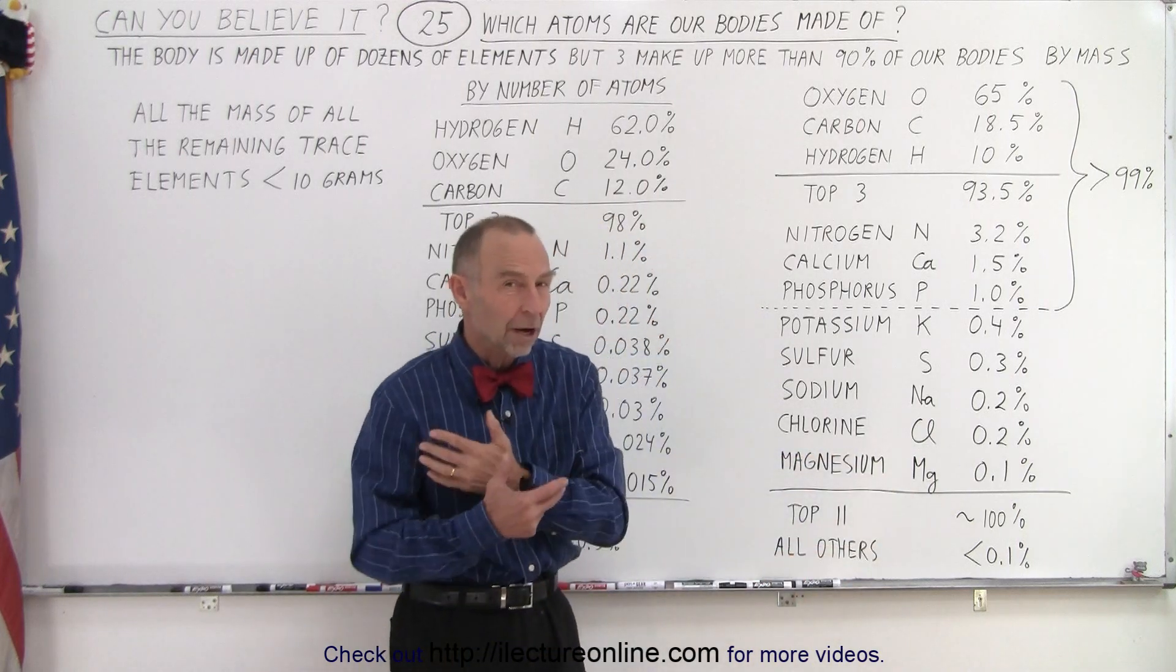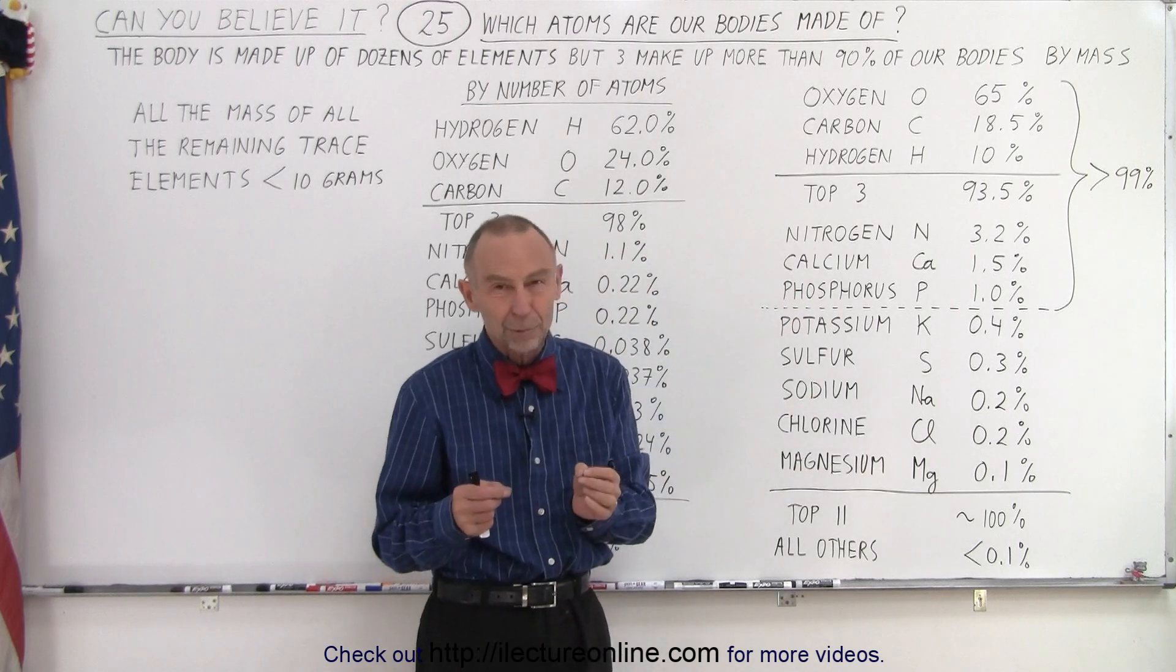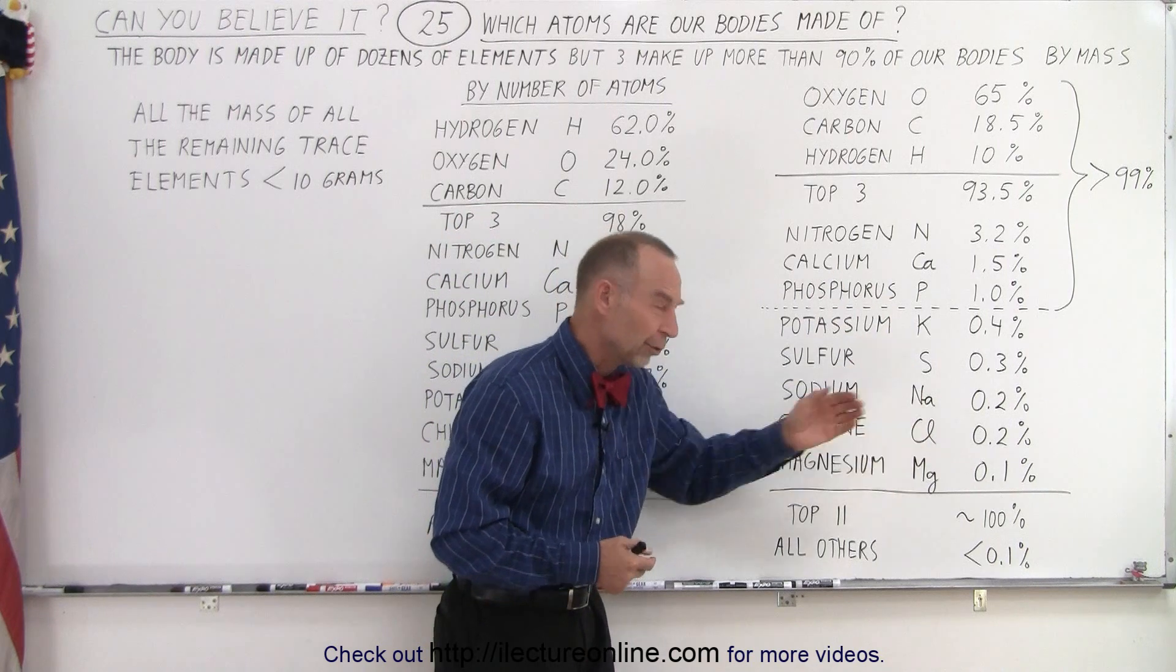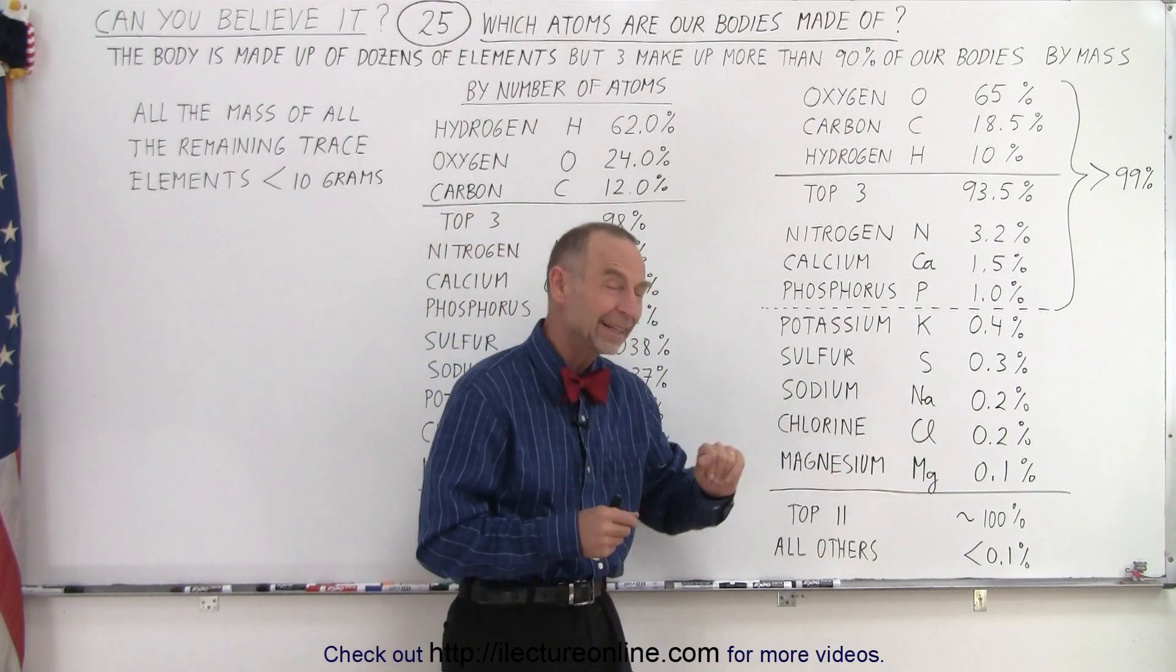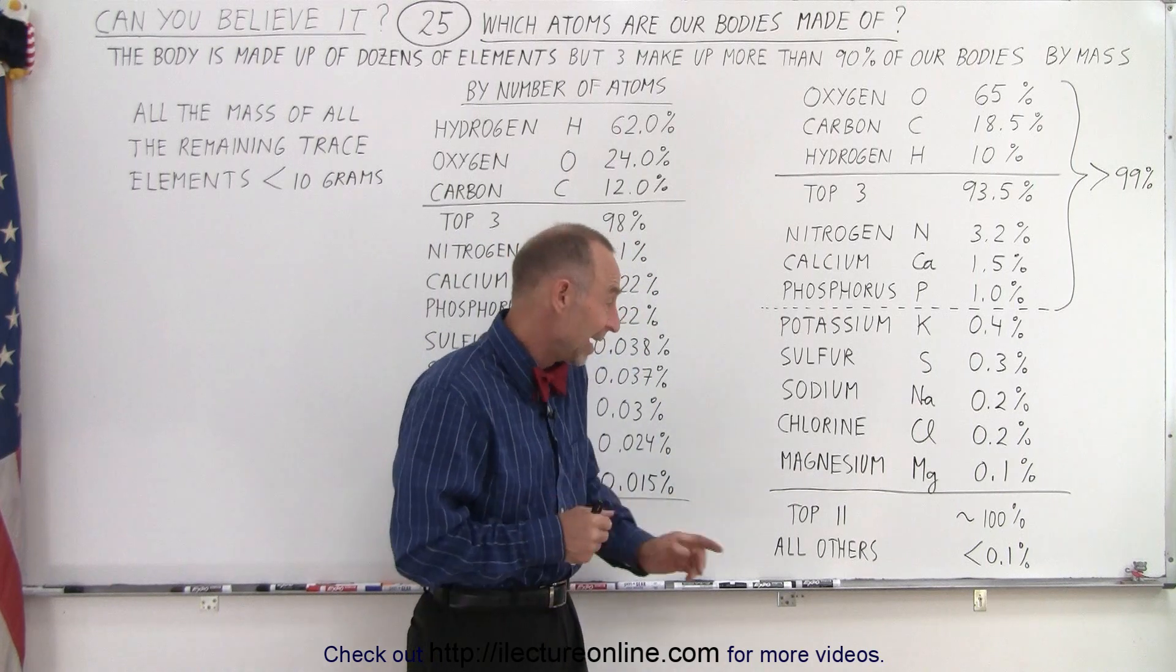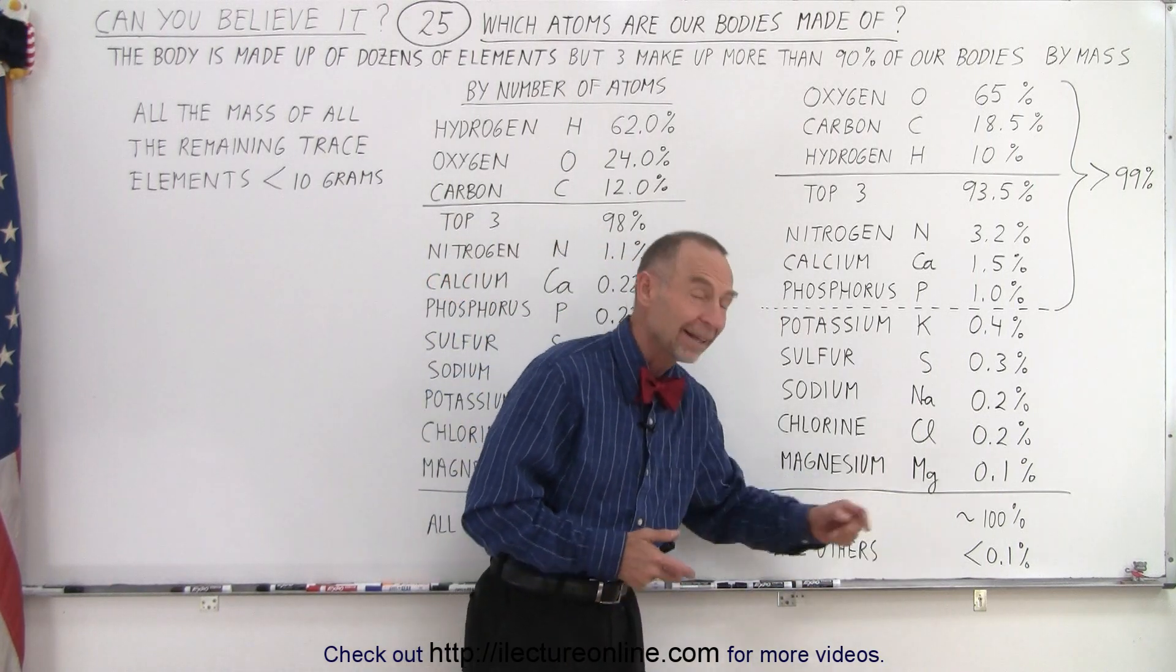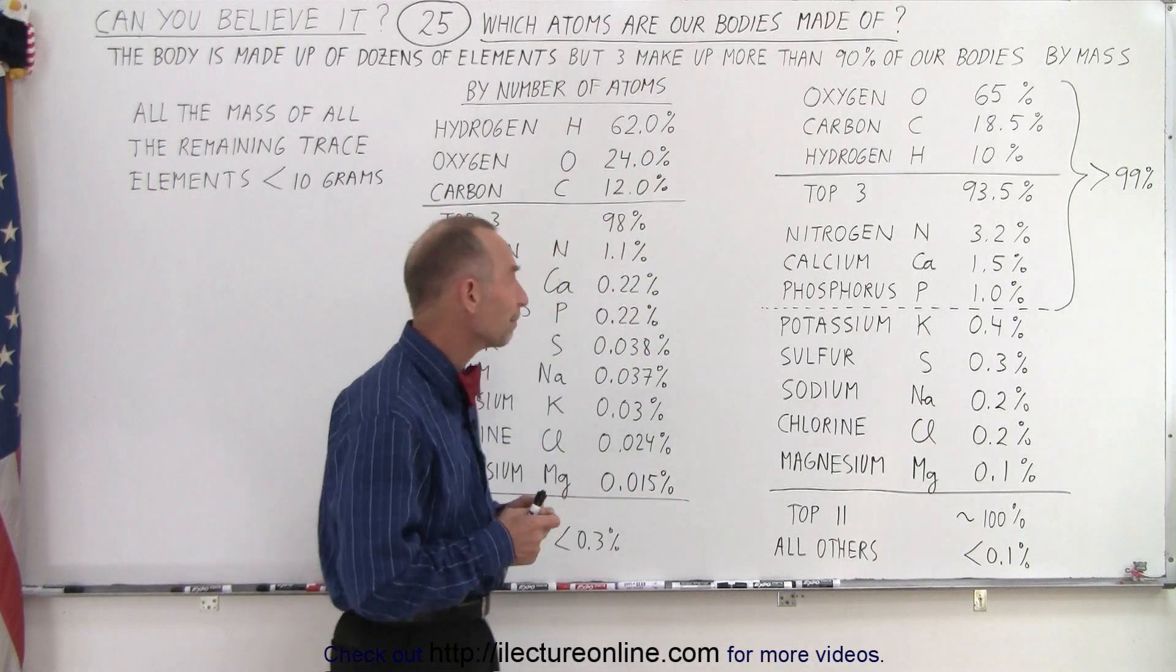Now, if you add them up, you'll see they add up to more than 100% because that's a roundoff error. These numbers, of course, are not exact. If we were to put more exact numbers on, it would be just slightly less than 100%. And then all other elements combined on the periodic table, less than 0.1% of them make up our bodies.